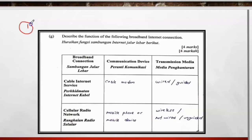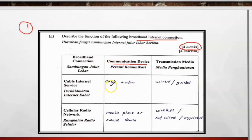Here is an example from a past exam question: describe the function of the following broadband internet connection. For cable internet service, it already states the communication device, so the answer is cable modem. The transmission media for cable modem is of course wired, or you can write 'guided.'